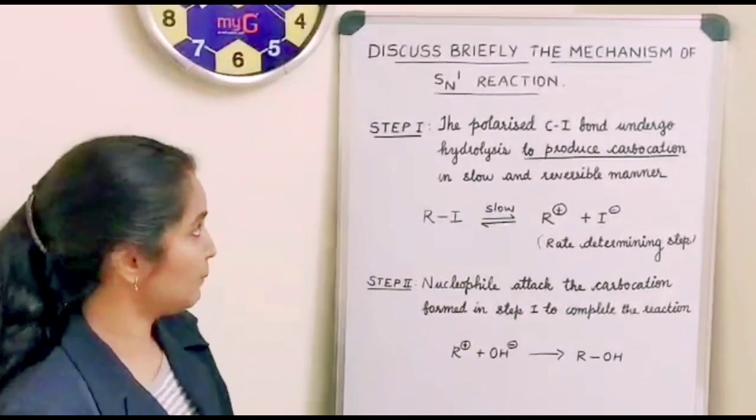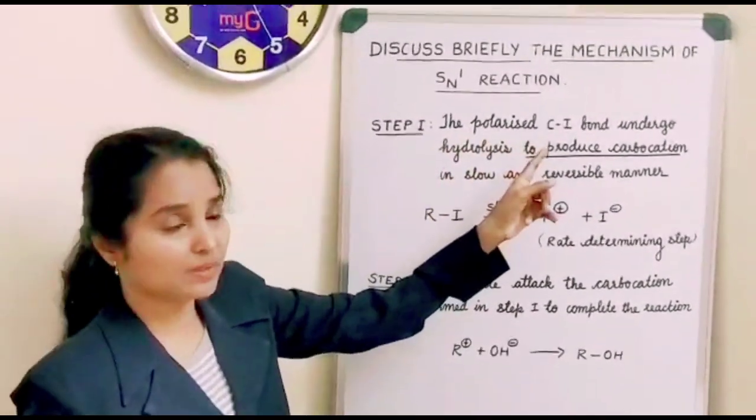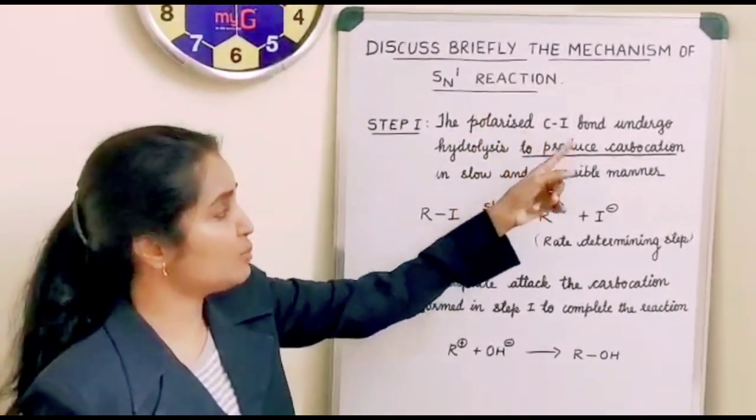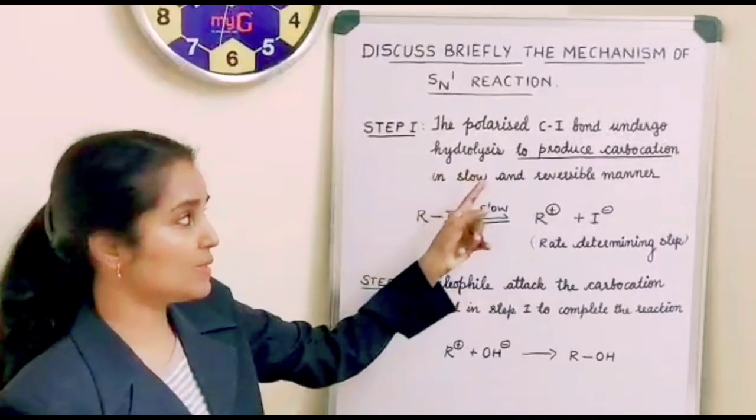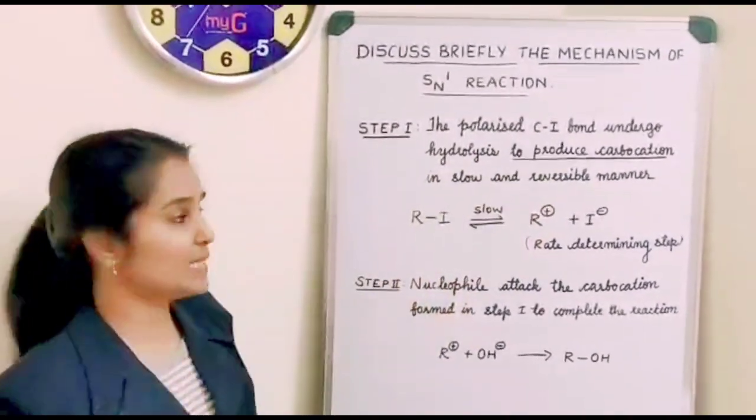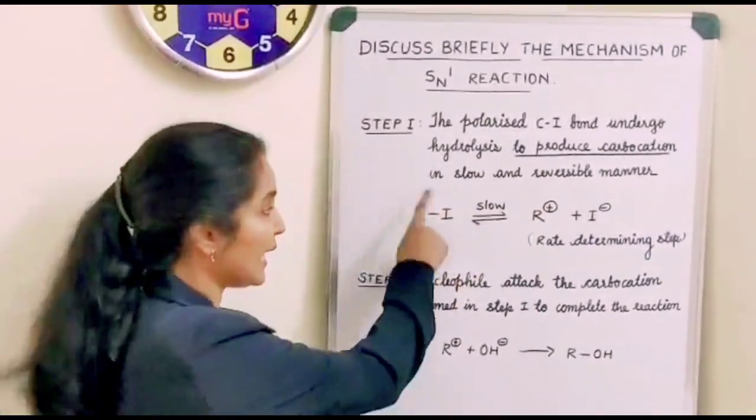So the first step is the polarized C-I bond, that means carbon halogen bond. Here it is iodine. So carbon halogen bond undergoes hydrolysis to produce carbocation in slow and reversible manner. So you can see here, alkyl halide, alkyl iodine, R-I.